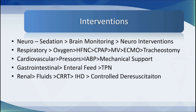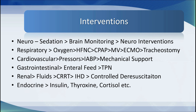In terms of the kidneys, we give patients fluids and carefully replace electrolytes to keep levels within normal range. Some patients will require continuous kidney replacement therapy or intermittent haemodialysis, and frequently they will require controlled de-resuscitation in the late stage of their illness. For the endocrine system, we give insulin if blood sugars are high, and sometimes steroids or thyroid hormones if there is a problem with those organ systems.